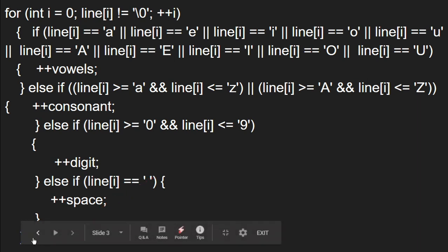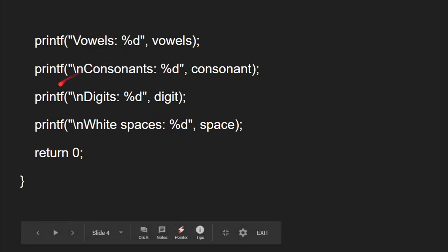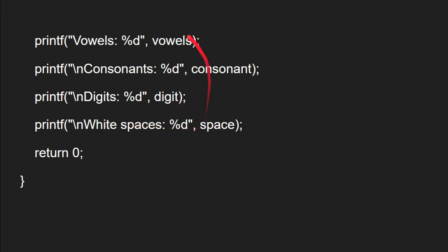After the for loop closes, we print the results. Using printf with the format specifiers %d, we print the number of vowels, number of consonants, number of digits, and number of white spaces, each on a new line using \n. Finally, return 0 is used because it is an int main function. That's the complete program.